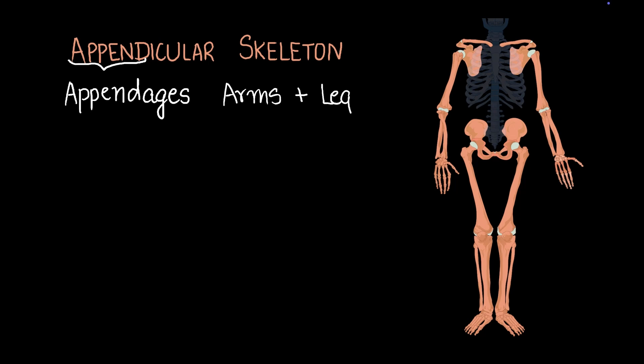The appendicular skeleton - the word appendicular comes from the word appendage. Appendage actually means limbs. Basically our hands, our arms, and our legs are our appendages. These help with walking, writing, holding stuff, carrying things, and a range of things that we do with our hands and legs.